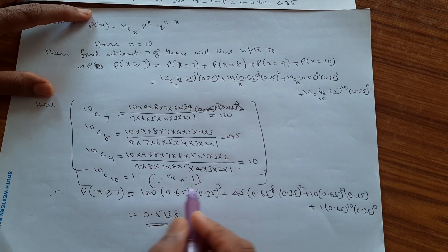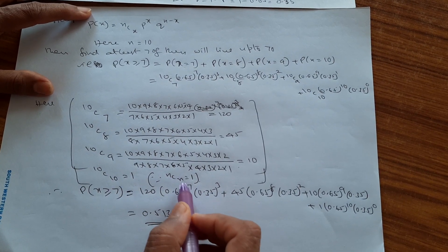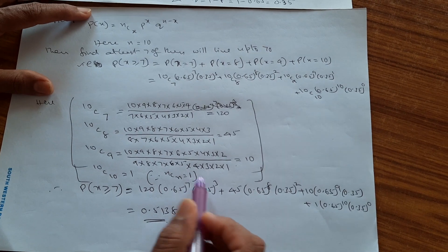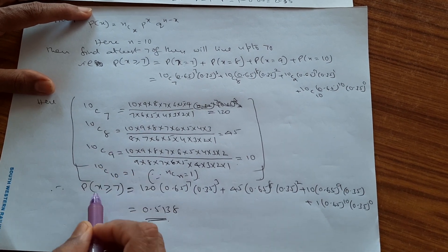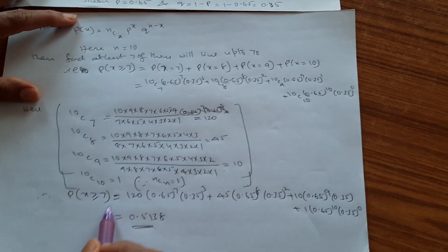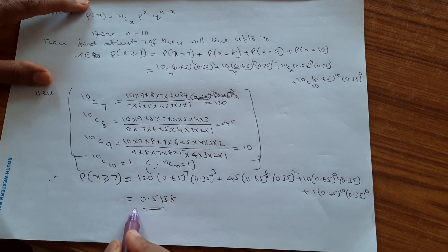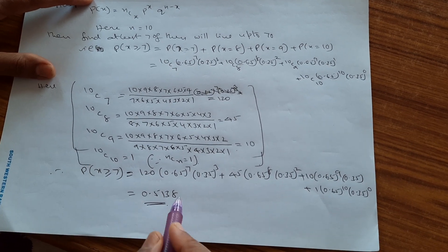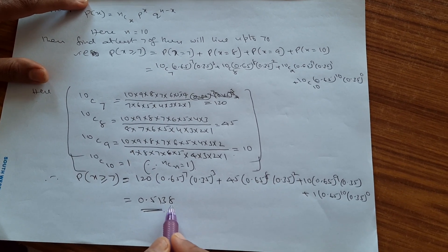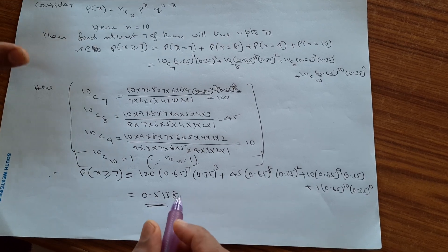Note that 10C10 equals NC0 equals 1. Simplifying all terms, the answer is 0.5138. This is the solution to this problem.